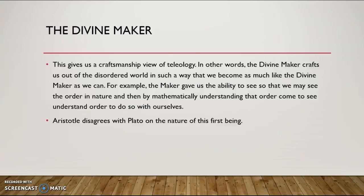Here's an example of how this might work: the maker in making humans gave us the ability to see so that we can see the order in nature, and then come to have a mathematical understanding of that order, and then come to have this abstract mathematical knowledge of order — a beautiful, ordered, unchanging thing. And then we can come to understand the order within ourselves. So by giving us just this sight, to see these structures in the world, the divine maker gave us the ability to emulate him as much as possible.